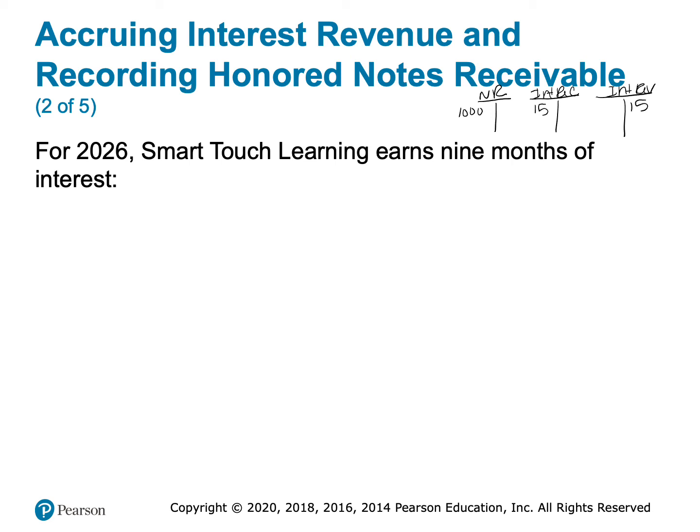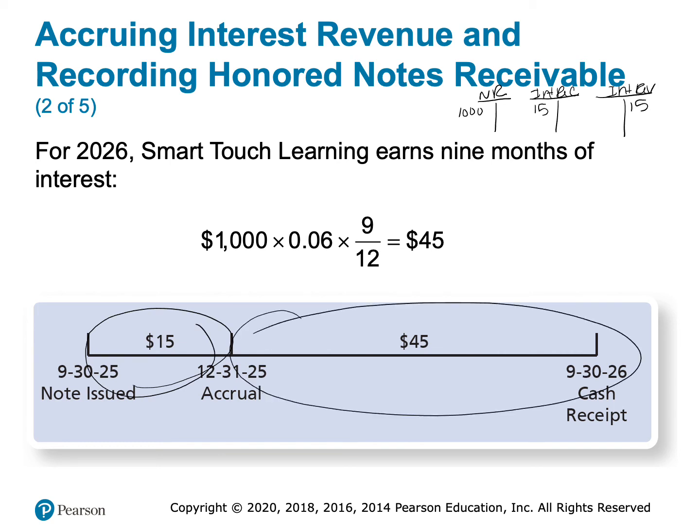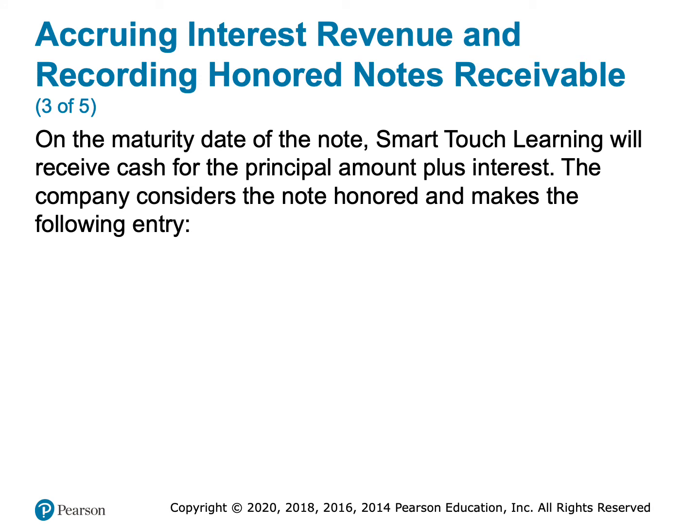Now pretend it's September 30th of next year — Lauren is going to pay us back. She already owes us $15 for the first three months of interest. We also need to calculate the interest from January 1st to September 30th, which is nine months. So $1,000 × 6% × 9/12 = $45. We've earned another $45 of interest on this loan, bringing the total interest Lauren owes us to $60.